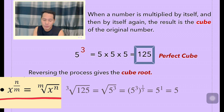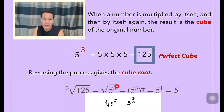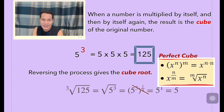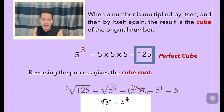If we get the cube root of 125, remember that 125 can be expressed in exponential form as 5 to the power of 3. The cube root can be expressed as a fractional index — we multiply it to the power of 1 third, and then we do cancellation. Remember the law of indices: we multiply power to a power. So we get 5 to the power of 1, which is equal to 5. That's the meaning of the cube root.